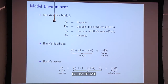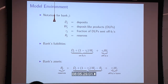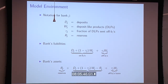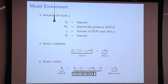To give you a sense of the model's ingredients, we think of a bank that divides its activities. On the liability side, it raises funding in two forms: traditional deposits, booked on balance sheet, and deposit-like products. The key feature of these deposit-like products is that they can be moved off balance sheet and can also offer higher interest rates than traditional deposits.